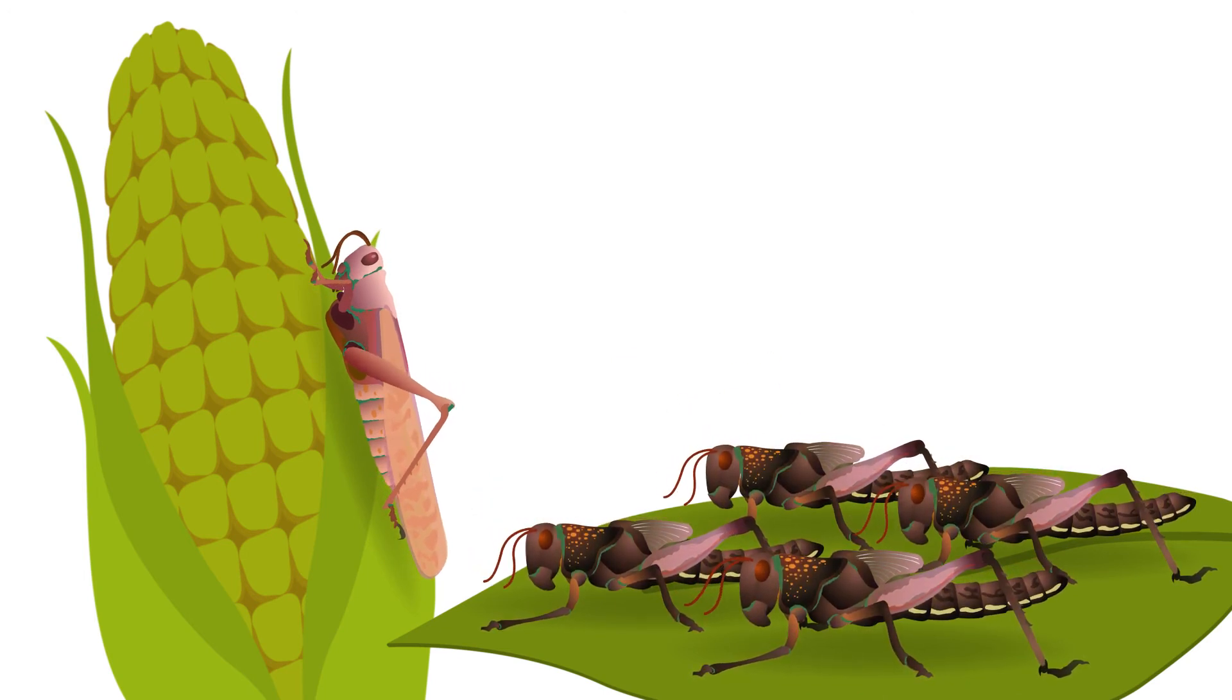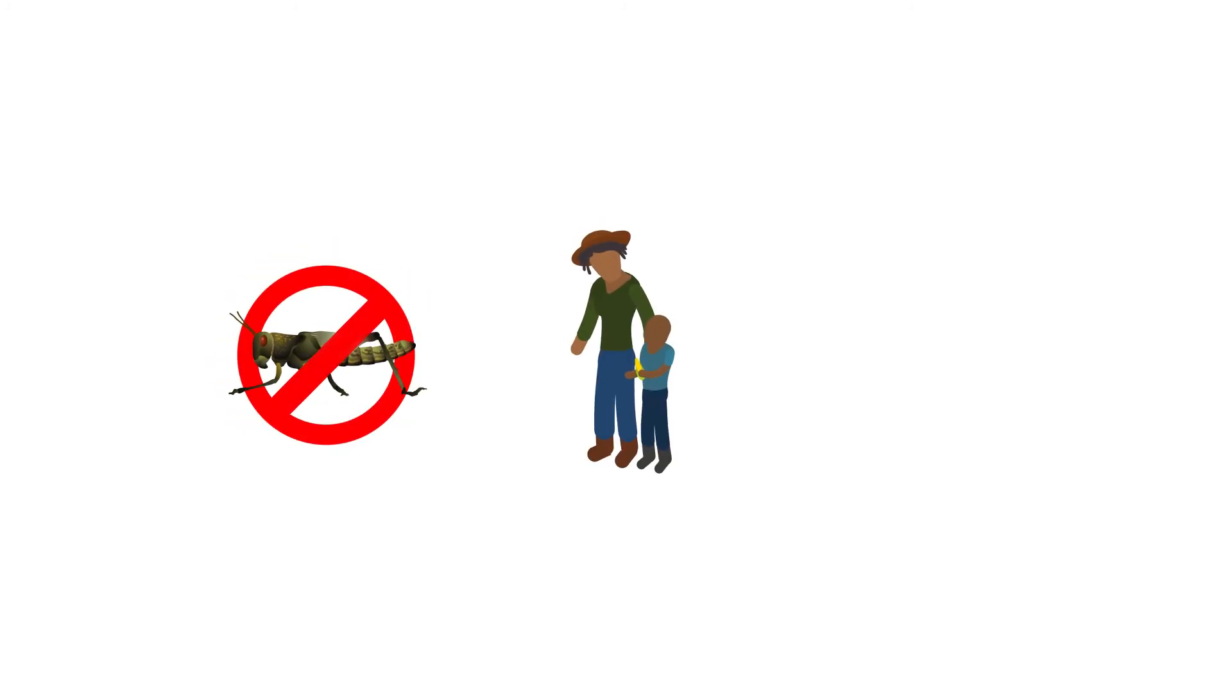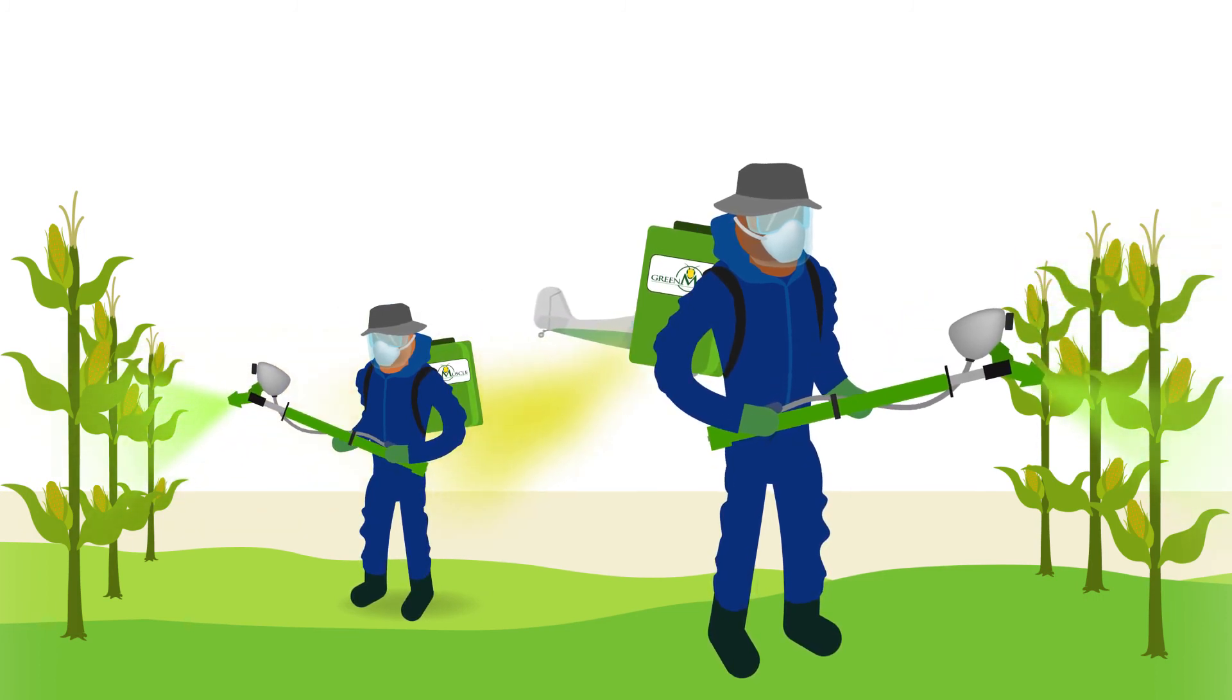These tests prove that Green Muscle is effective at controlling locusts and grasshoppers and is safe for humans and the environment. The Green Muscle formulation is also compatible with ultra-low volume spray equipment, so existing conventional application methods can be used.